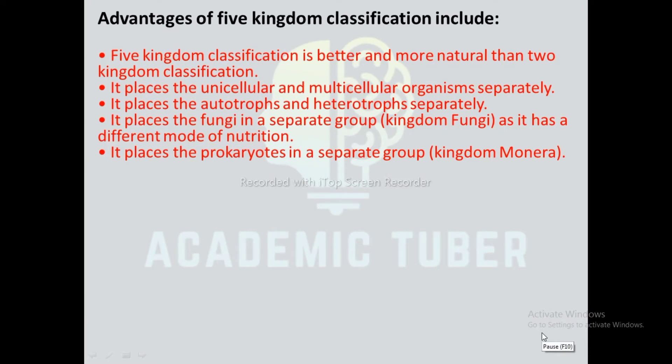Advantages of five kingdom system of classification: Five kingdom classification is better and more natural than two kingdom classification. It places unicellular and multicellular organisms separately. It places autotrophs and heterotrophs separately. It places fungi in a separate group — kingdom Fungi — as it has a different mode of nutrition. It places prokaryotes in a separate group, that is kingdom Monera.